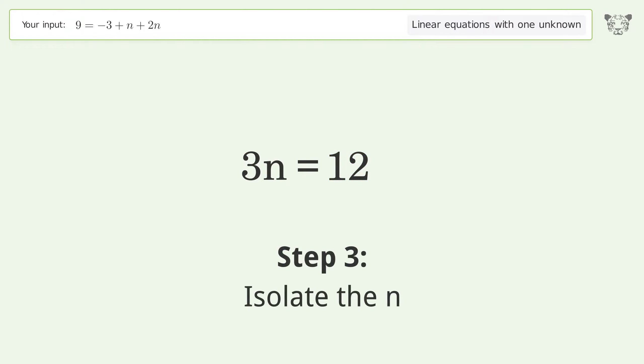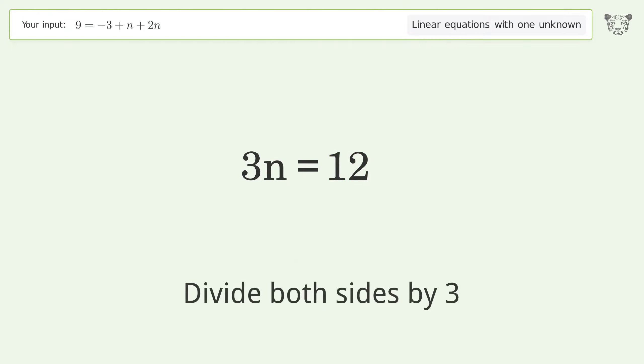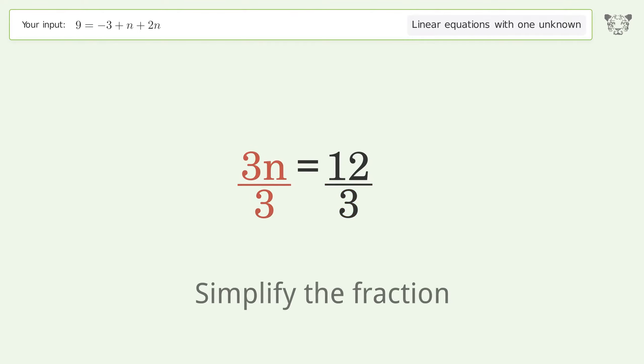Isolate the n — divide both sides by three. Simplify the fraction.